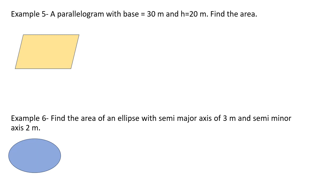Example 5: A parallelogram with base equals 30 meters and height equals 20 meters. Find the area. Area equals base times height, equals 30 times 20, equals 600 meters squared.